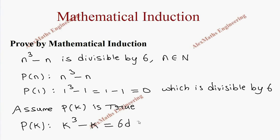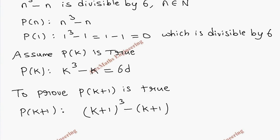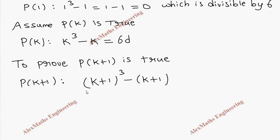Now to prove P(k+1) is true, for that we need to write P(k+1) expression, that is (k+1)³ - (k+1). We have to prove this is divisible by 6. So we go for the expansion of this. It is k³ + 3k² + 3k + 1 and minus k minus 1.